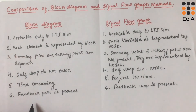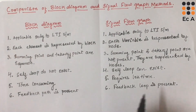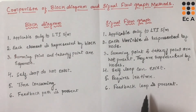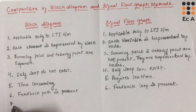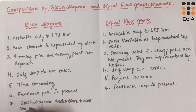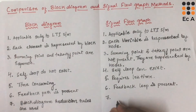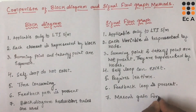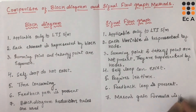In block diagram method, block diagram reduction rules are used to obtain the resulting transfer function. In case of signal flow graph, Mason's gain formula is used to obtain the overall transfer function.